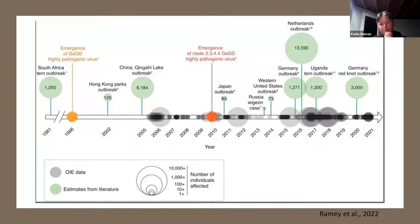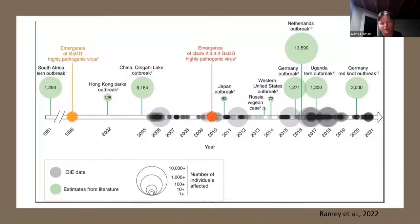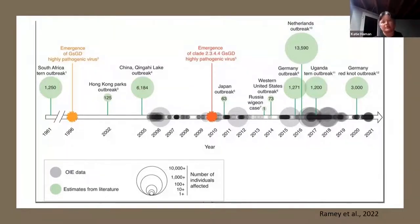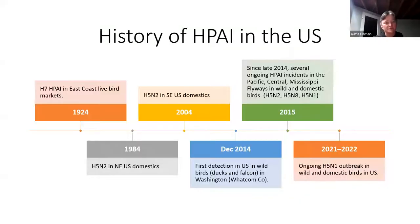I want to note that the 2014–15 H5N1 found in the United States was a different H5N1 than what we're currently dealing with. The big outbreaks then were more associated with H5N2 and H5N8, not just H5N1. Pretty universally across North America, the outbreak we're seeing now is solely H5N1 2.3.4.4b from Europe — we're not seeing multiple different strains or clades.